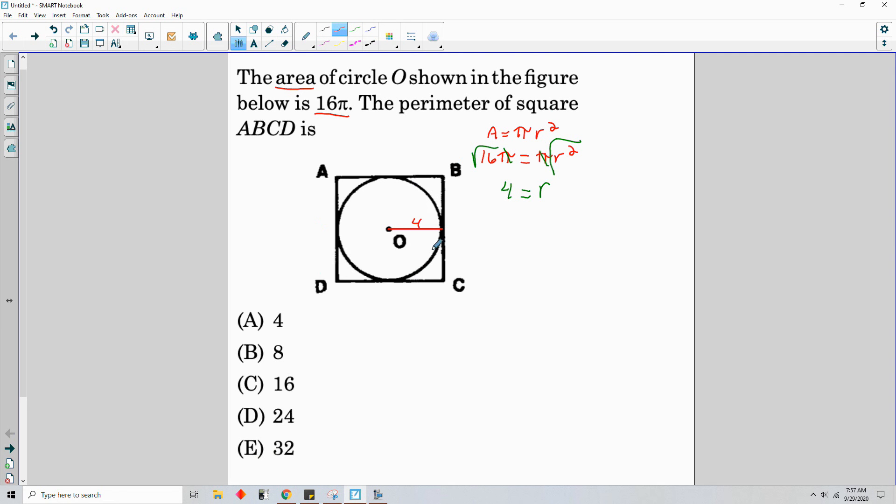The radius is 4. So if the radius is 4, and I extend this all the way across, like so, then the diameter is 8, because this is 4 over here as well. So that means the sides of the square are 8.